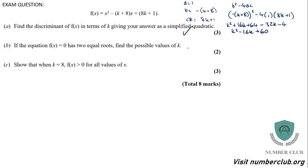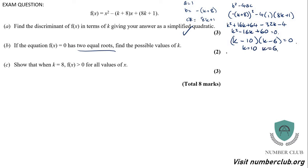For two equal roots, the discriminant equals 0: k squared minus 16k plus 60 equals 0, which factorises as (k minus 10)(k minus 6) equals 0. So k equals 10 and k equals 6 — those are the possible values of k. You can graph it too, with 6 and 10 as roots giving a u-shaped curve.